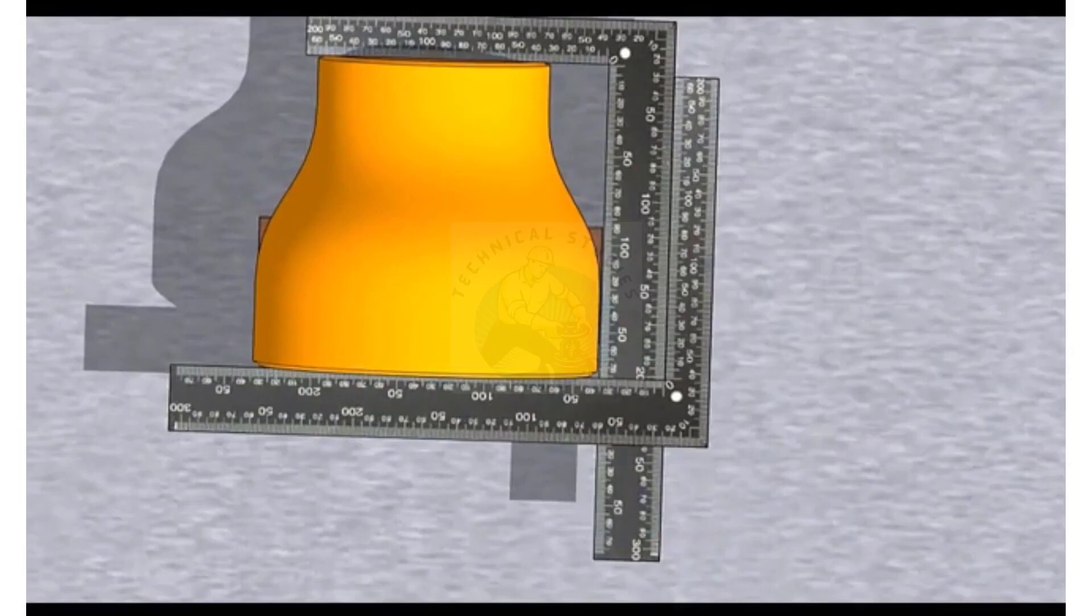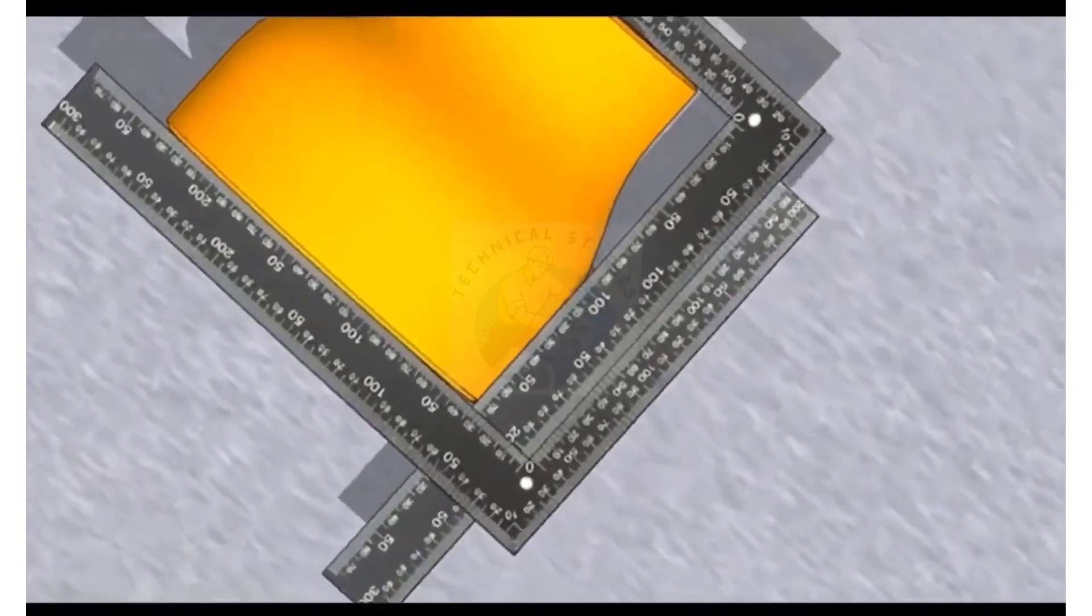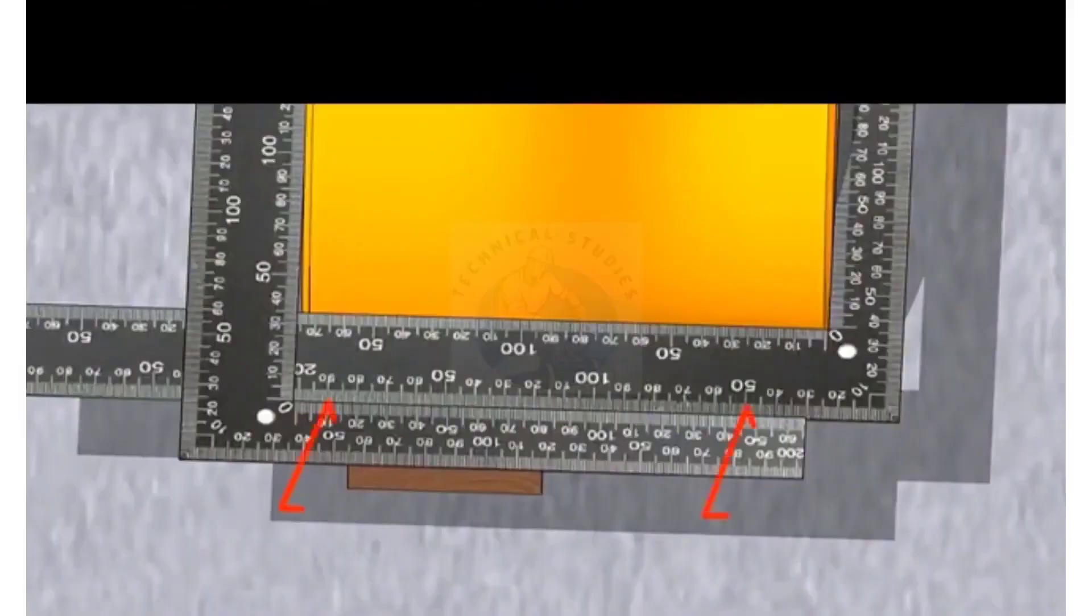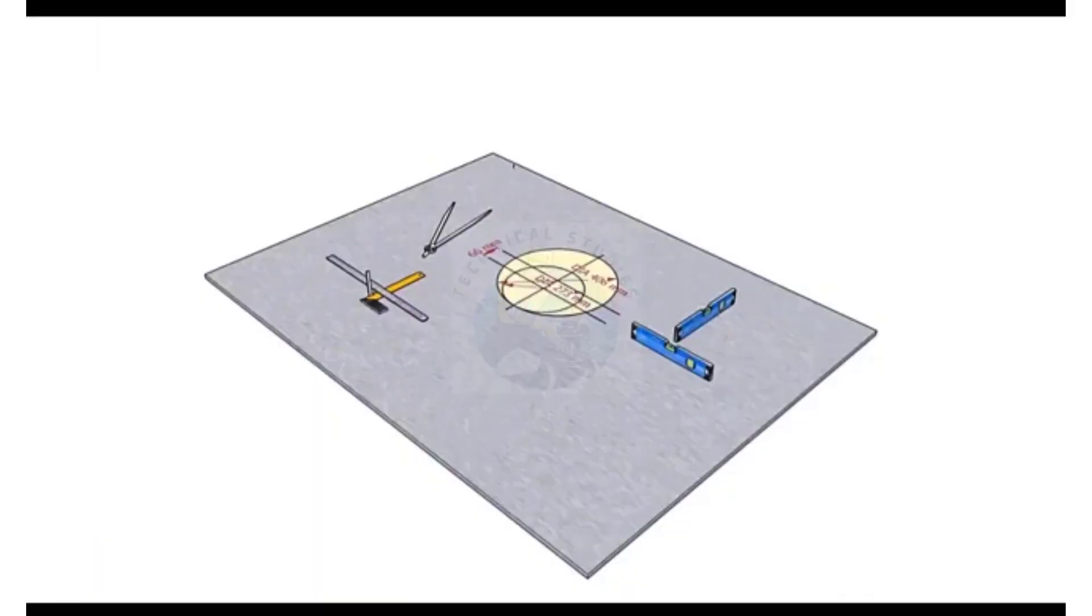Check if the other hands of the right angle are parallel to each other. The reducer is almost okay.